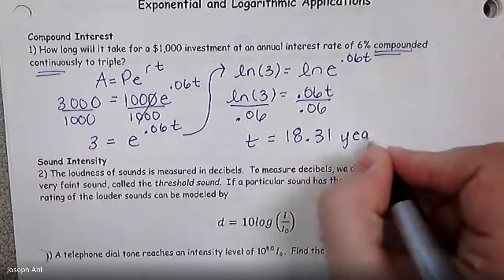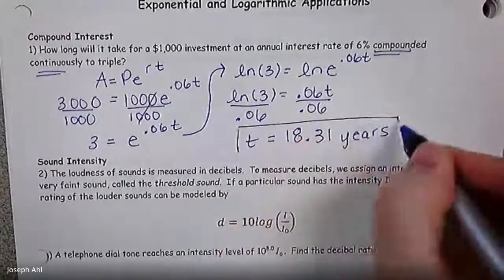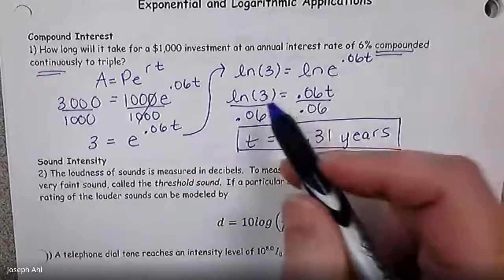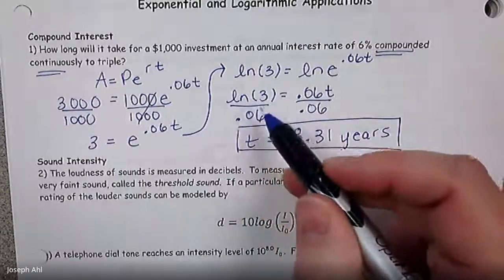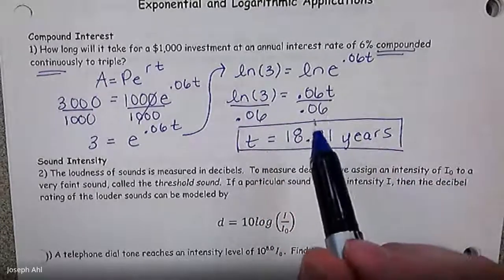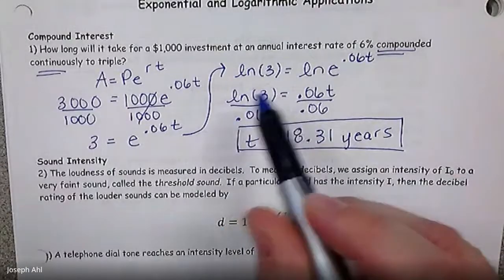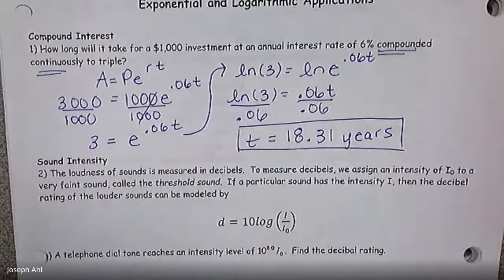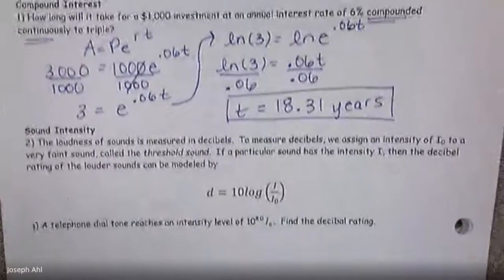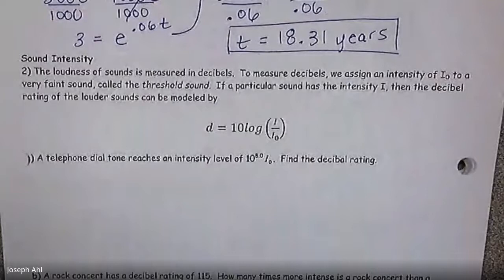However, that's not going to mean a lot to you if you walk into the bank and they say to triple your investment it's going to take ln of three over point zero six years. Now let's round to the hundredths place just to bring some context to what this value actually is. ln of three divided by point zero six is eighteen point three one years is how long it will take to triple our investment.